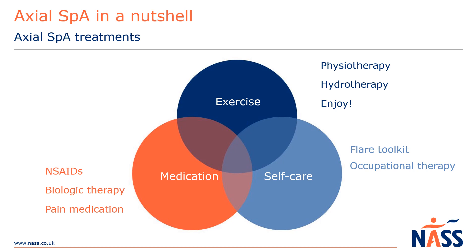You can ask your doctor to make a referral to occupational therapy if you're struggling with things around the house or at work — making adaptations can help you do more with less pain and less fatigue. Smoking makes axial SpA worse and can reduce the effect of biologic therapy, so do consider asking your doctor for support in reducing or quitting. Building a community around you and hearing from others in a similar situation can really help you cope and give emotional support too.